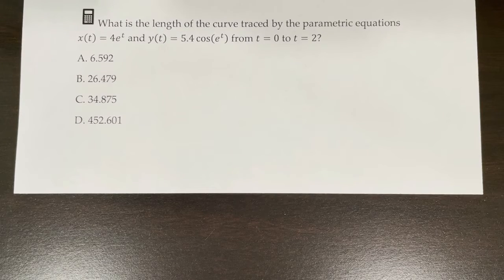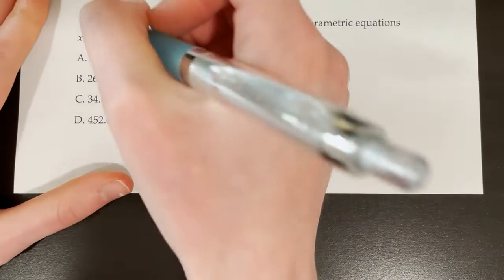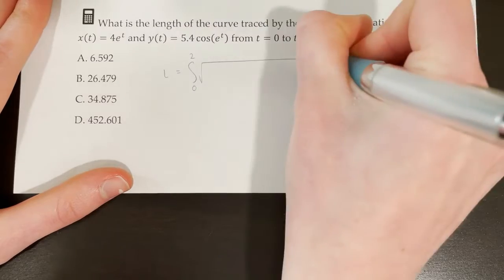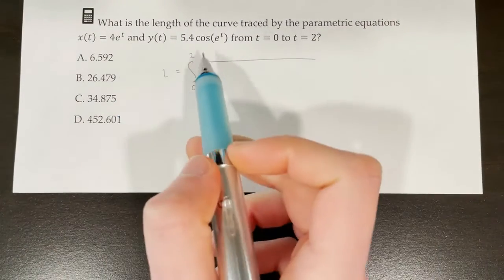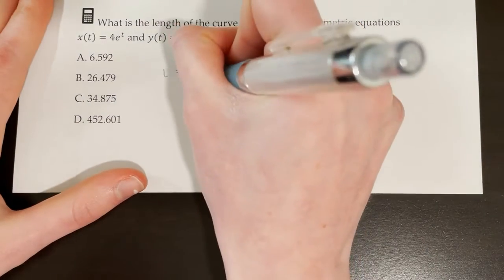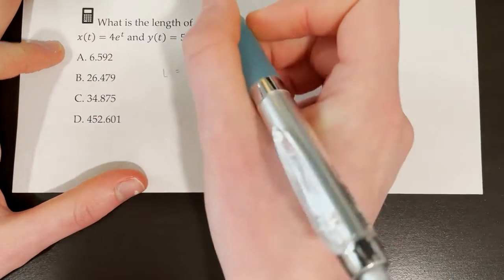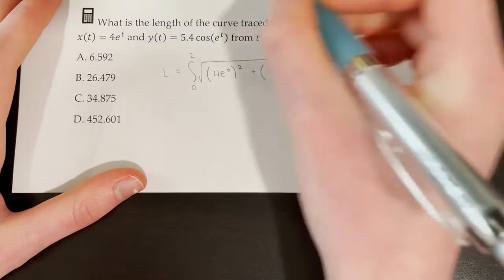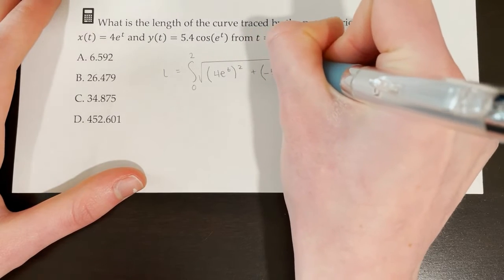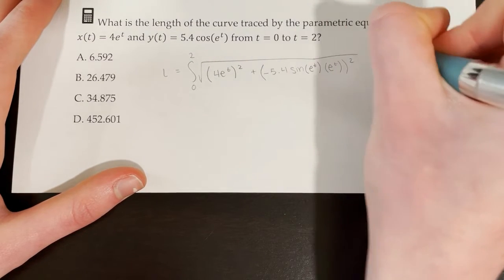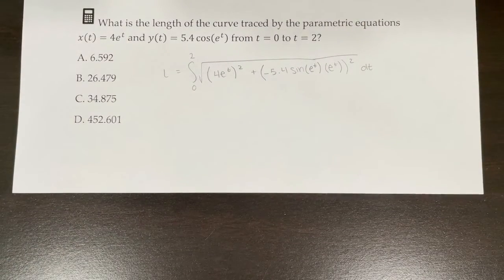Next: find the length of the curve traced by x(t) = 4eᵗ and y(t) = 5.4·cos(eᵗ), from t = 0 to t = 2. We set up the integral from 0 to 2. For dx/dt: the derivative of 4eᵗ is 4eᵗ itself, so (dx/dt)² = (4eᵗ)². For dy/dt: using the chain rule on 5.4cos(eᵗ) gives −5.4·sin(eᵗ)·eᵗ, and that entire expression gets squared. Then we attach dt.